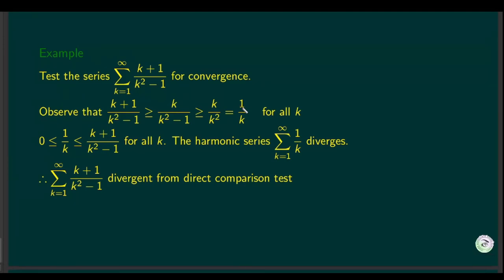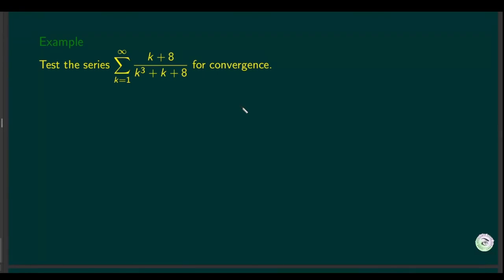Now let's move to another example where we test the convergence of a series. The plus 8 in the numerator is negligible compared to k, and k plus 8 in the denominator is negligible compared to k cubed for large k. So this behaves like k over k cubed, which simplifies to 1 over k squared. Since 1/k² converges by the p-series test, we aim to show the series is less than 1/k².